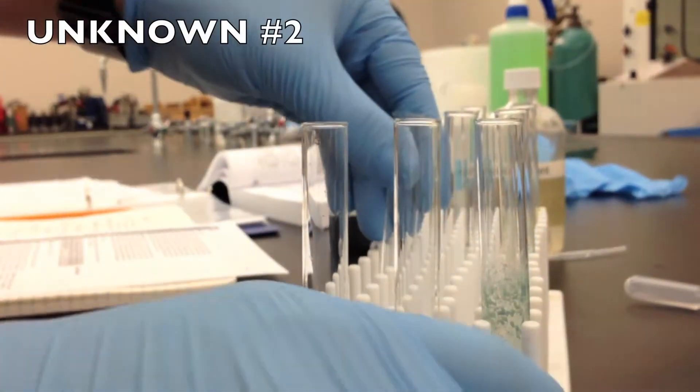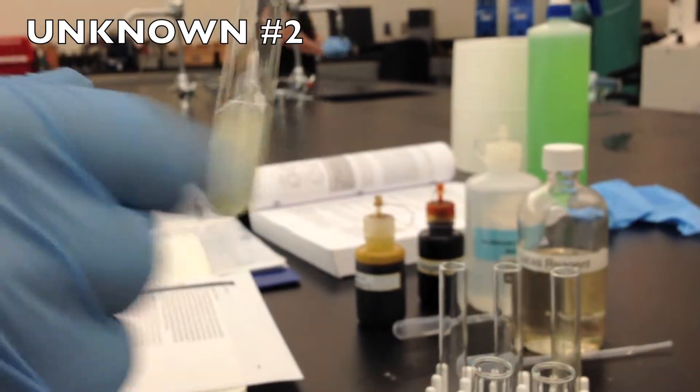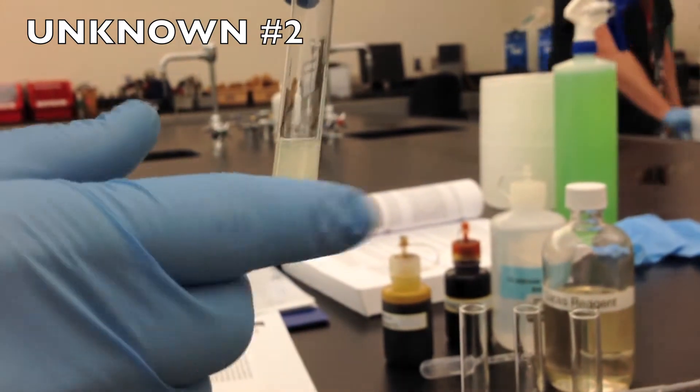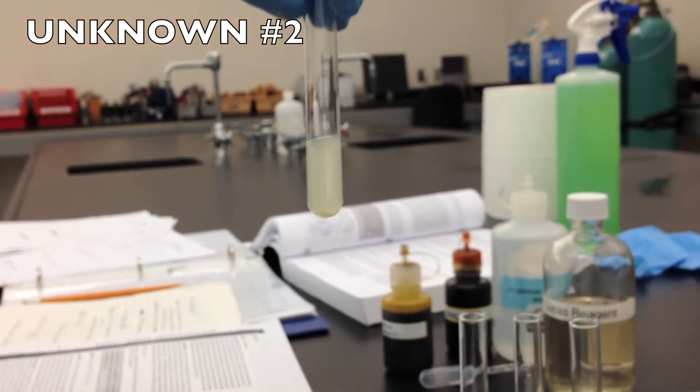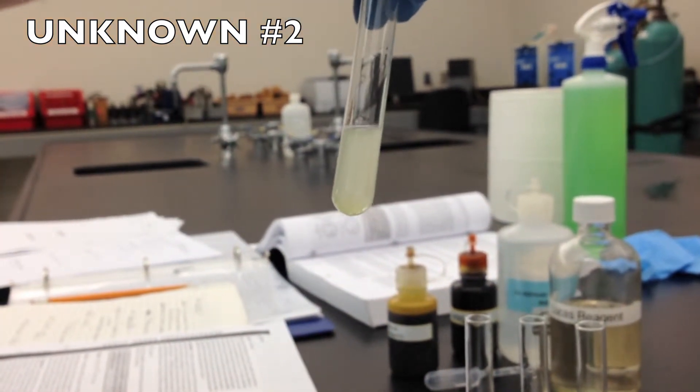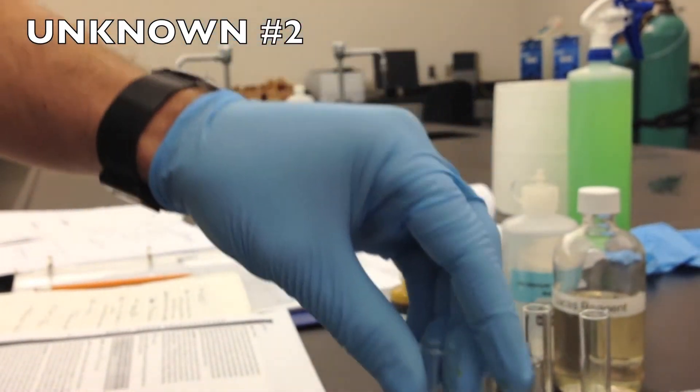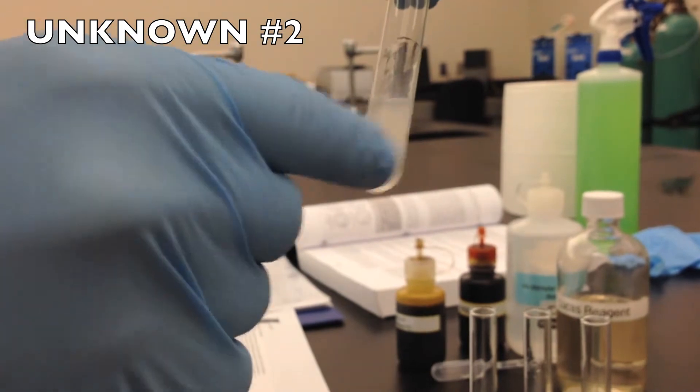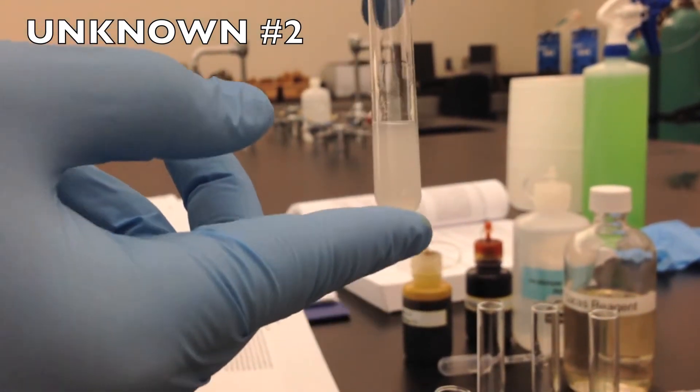Now with our second unknown, we got a positive result for the iodoform test. Which means it could only be a secondary alcohol. We also got a positive result later for the Lucas test, meaning it is either probably a secondary or could be a tertiary.